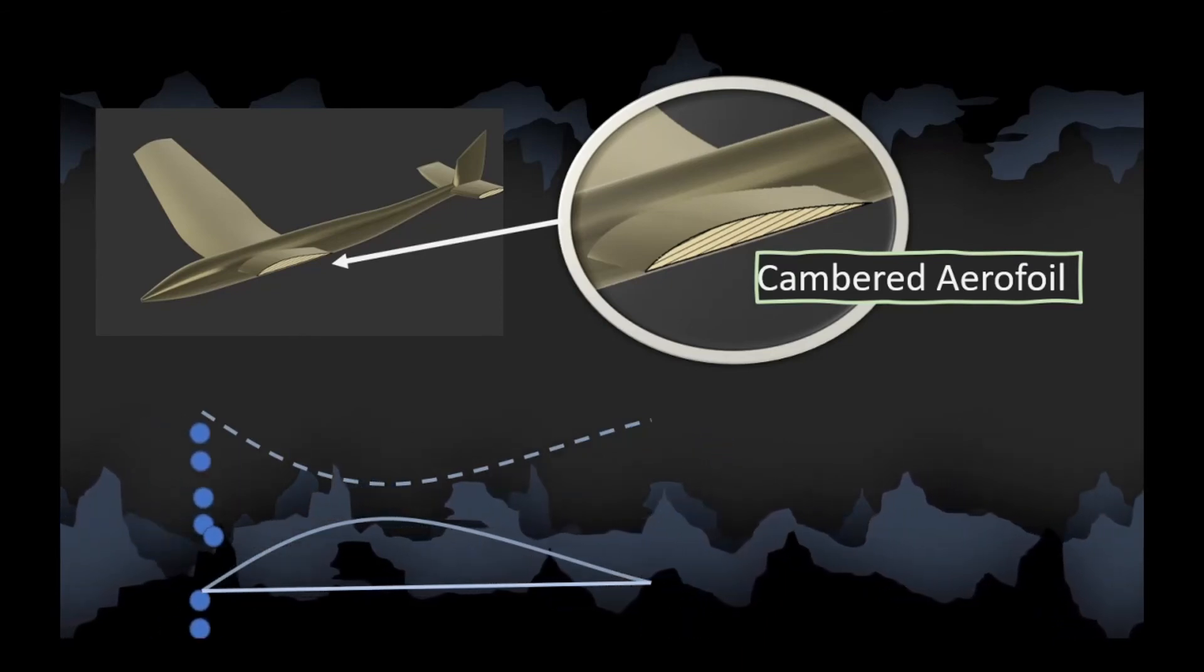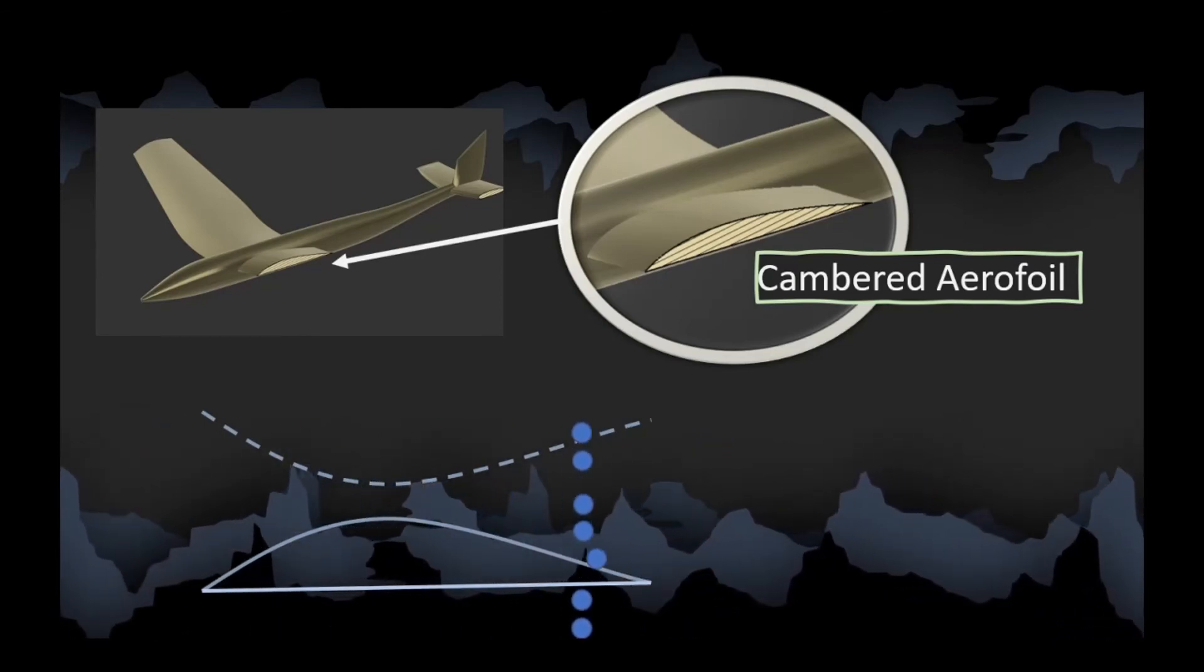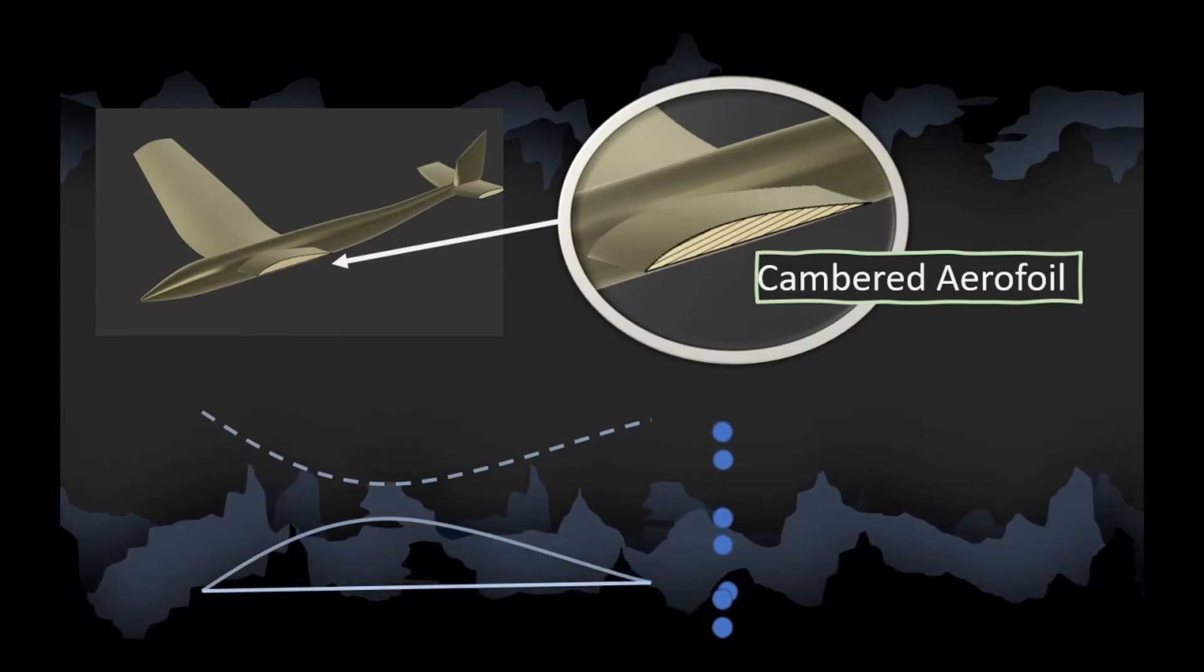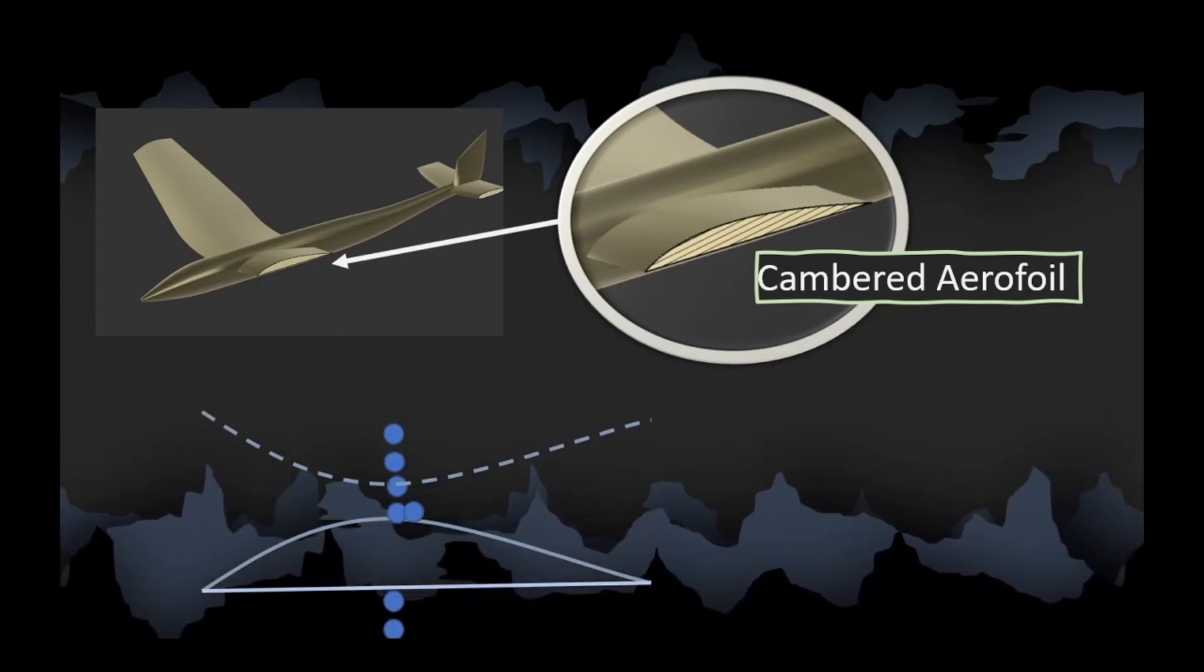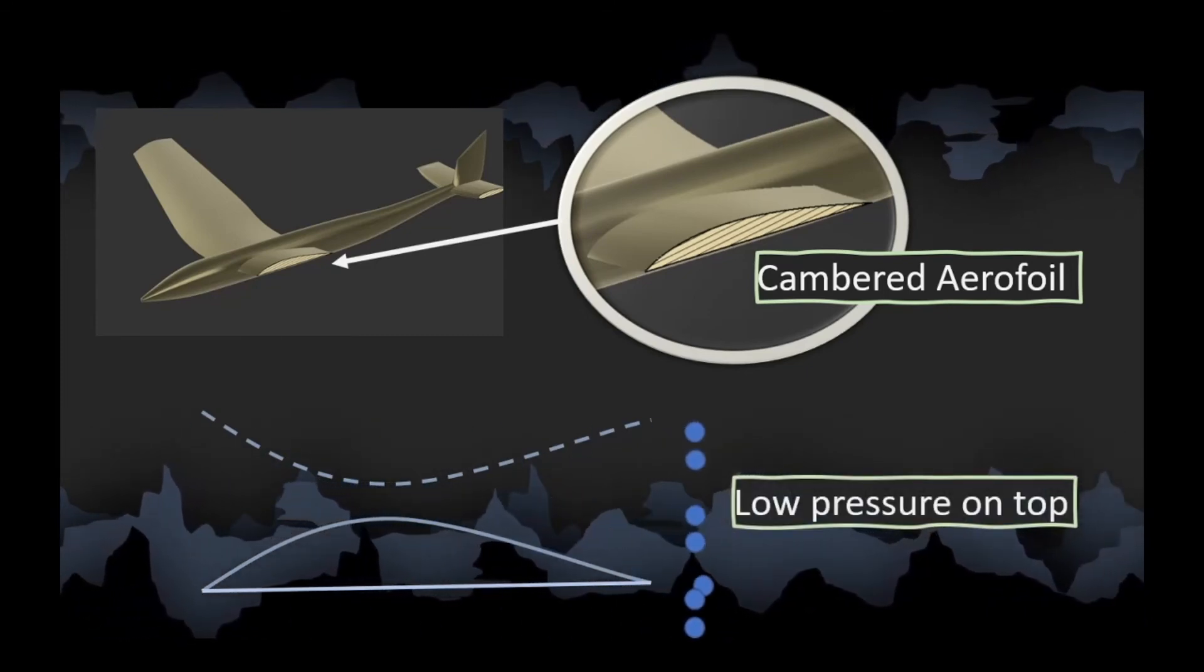As the airflow comes, the flow gets accelerated on top of the wing and the pressure decreases. The low pressure on top of the wing and the high pressure on the bottom surface of the wing produces lift force.